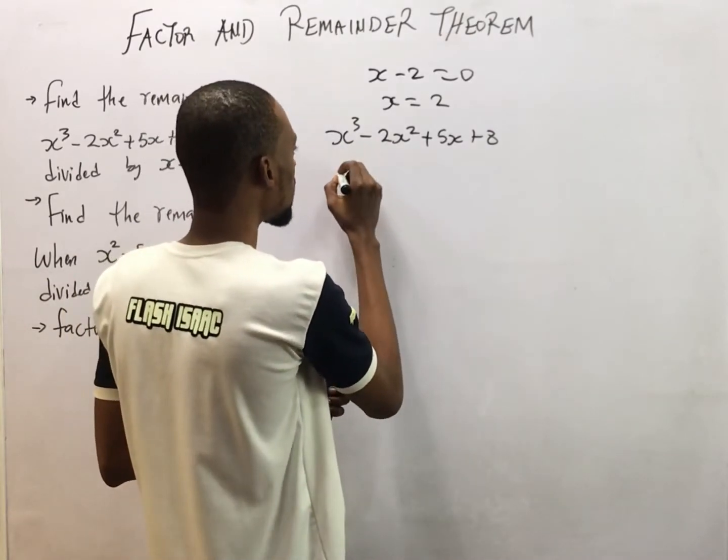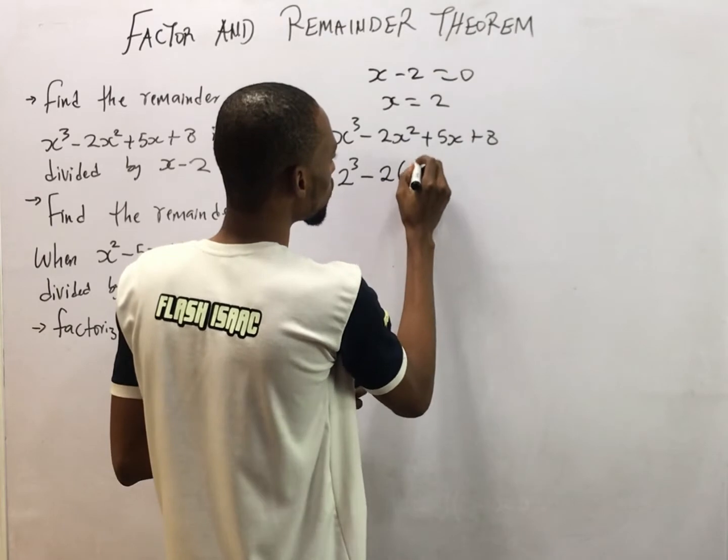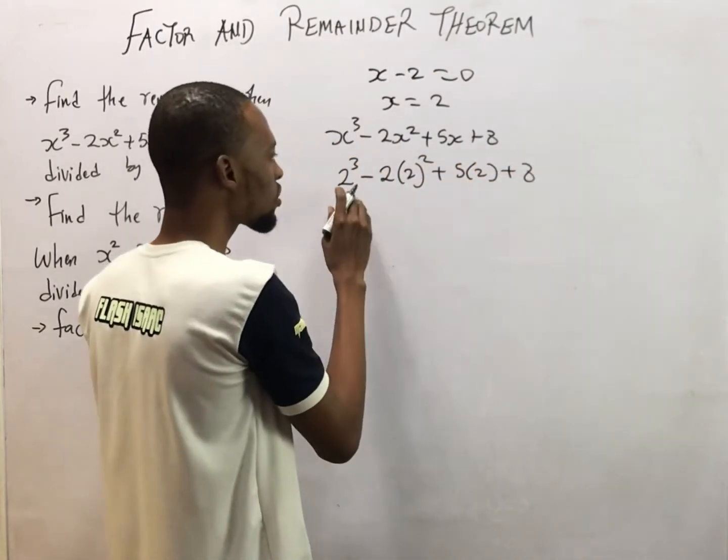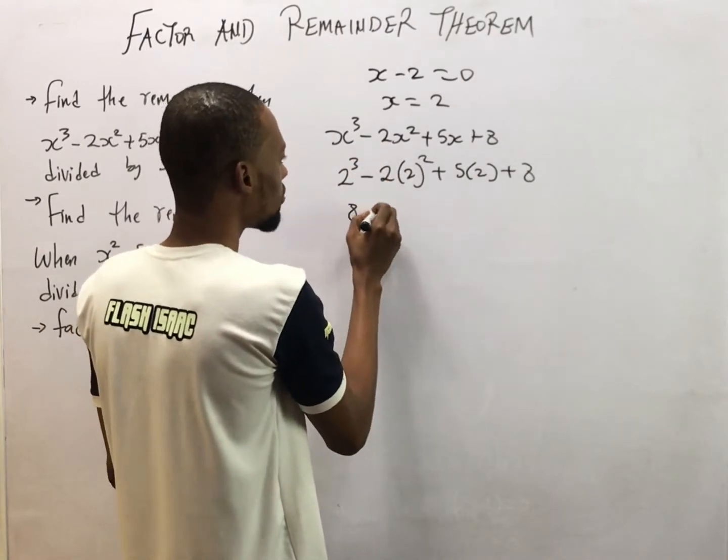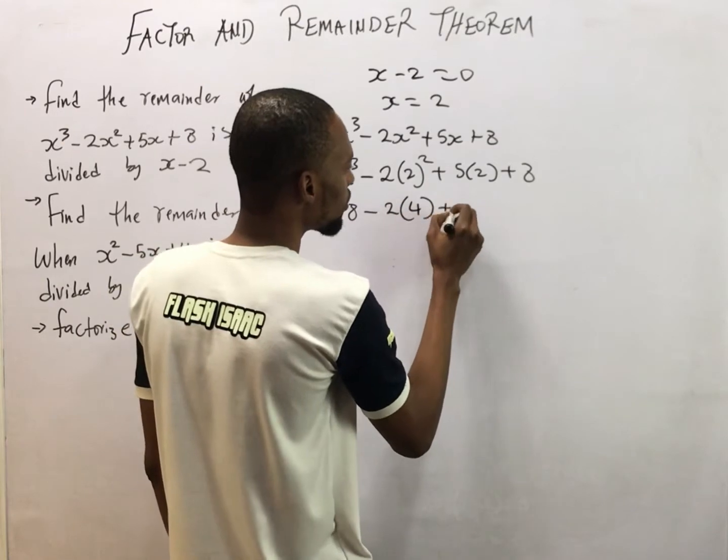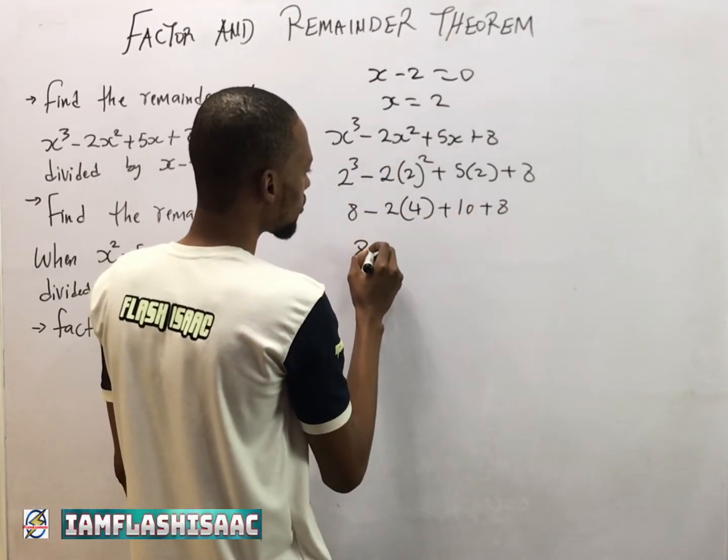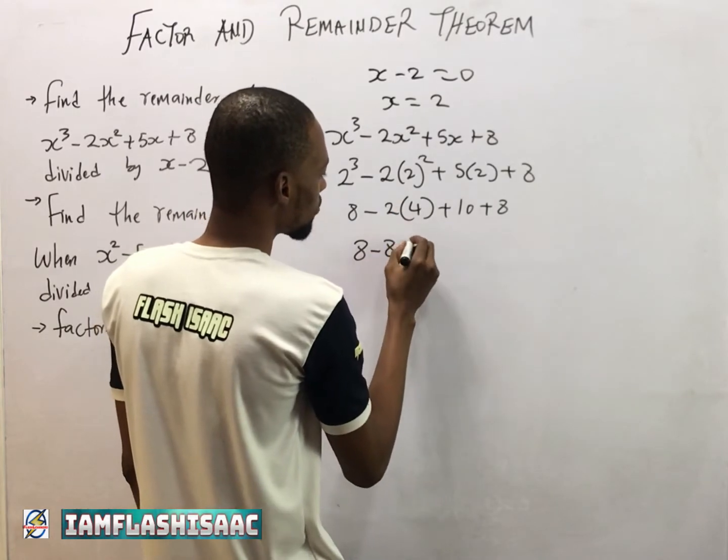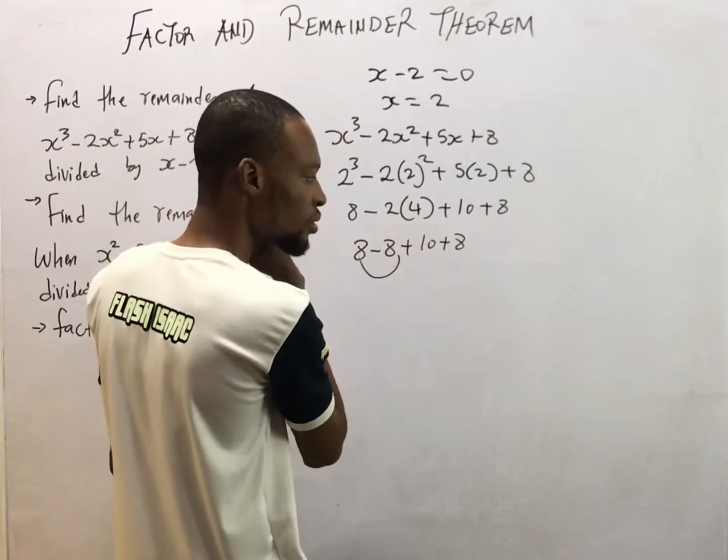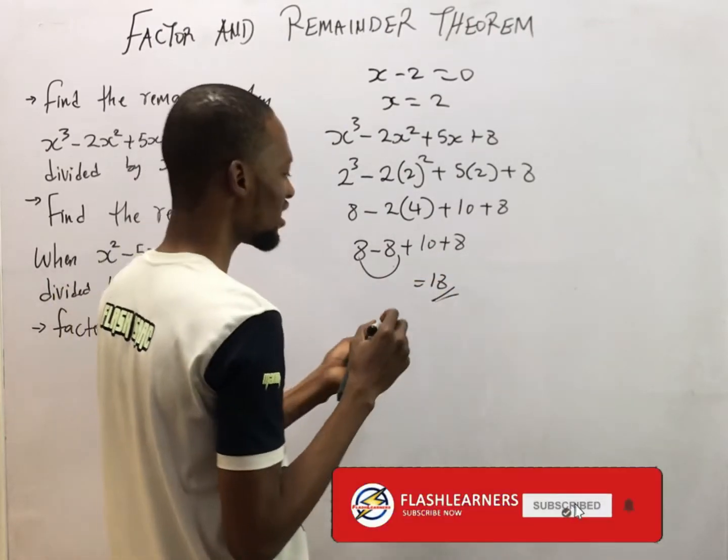So instead of S, we have 2 raised to the power of 3 minus 2 times 2 squared plus 5 times 2 plus 8. So 2 raised to the power of 3 is 8 minus 2 squared is 4 plus 10 plus 8. So 8 minus 8 plus 10 plus 8. 8 minus 8 is simply 0. So 10 plus 8 will give you 18. So the remainder is 18.